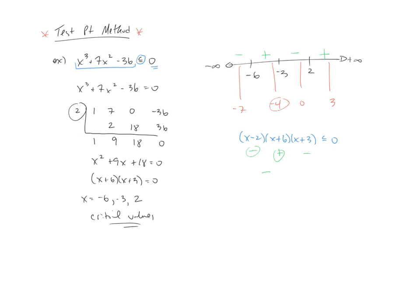So for us, we're interested in where the graph is below or on the x-axis. So we're interested in the negative numbers, negative intervals. So a final answer here would be negative infinity to -6, inclusive, union -3 to 2, inclusive. The inclusive brackets come because we have or equal to in this particular problem.